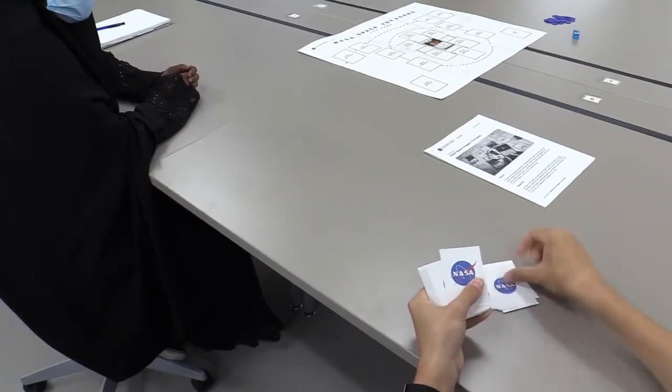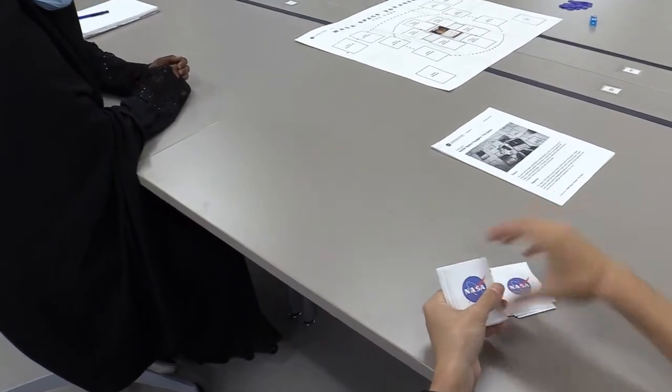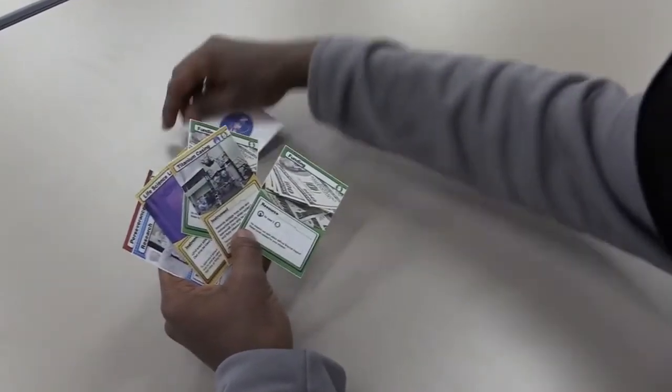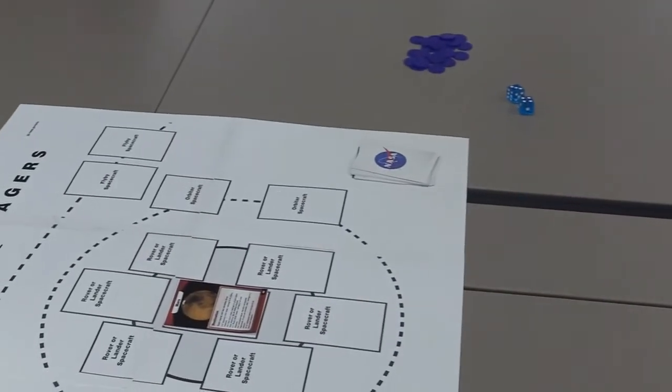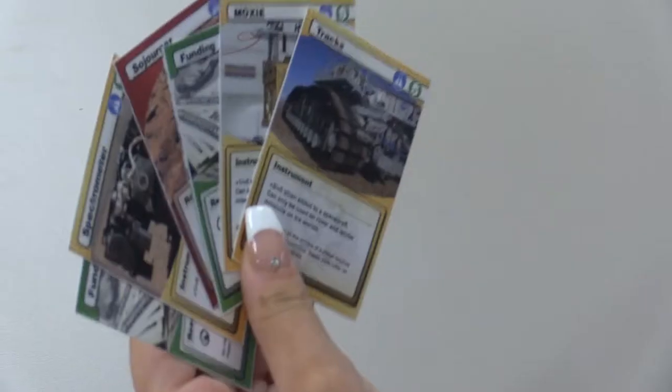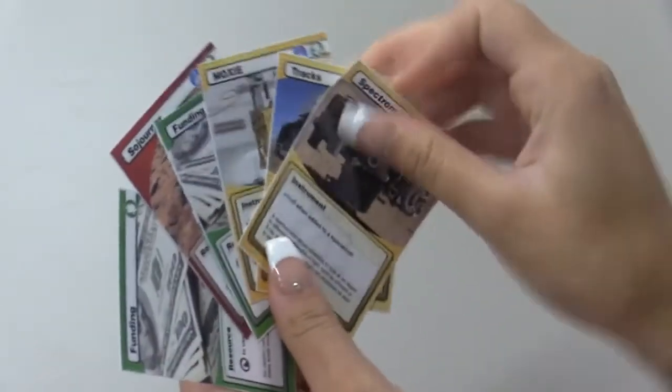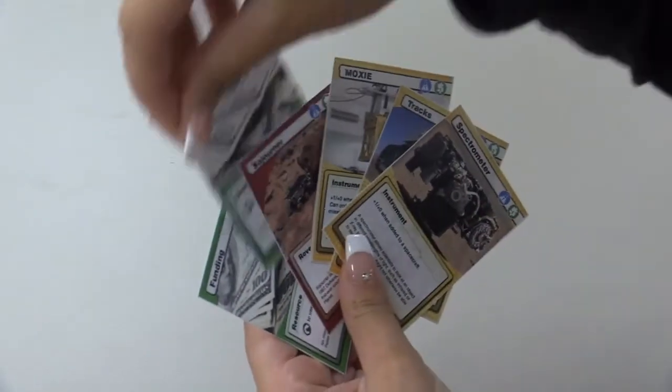The game begins by each player drawing seven cards from the shuffled deck. Players can choose to replace up to two of their cards, replacing their original cards back in the deck. Starting with the first player, each player takes a turn consisting of one or more of the following actions.